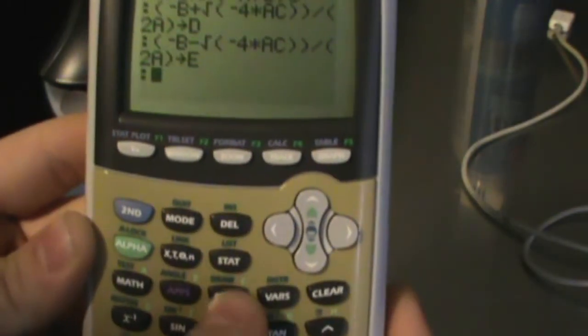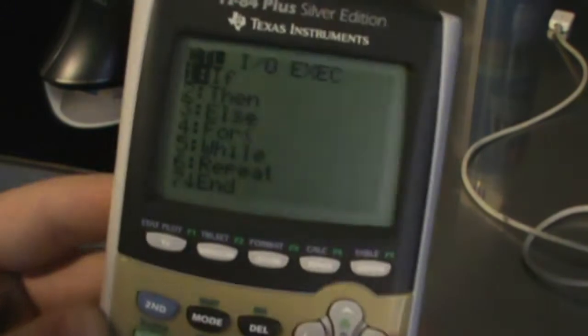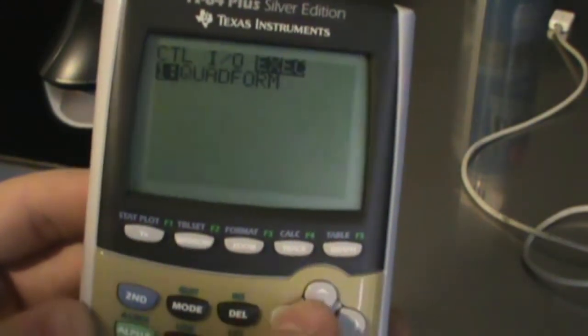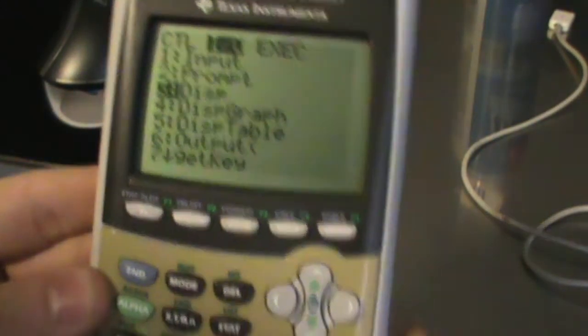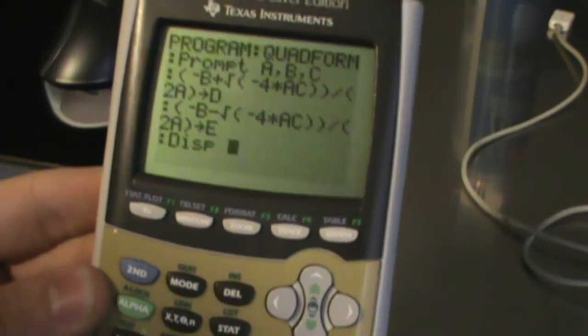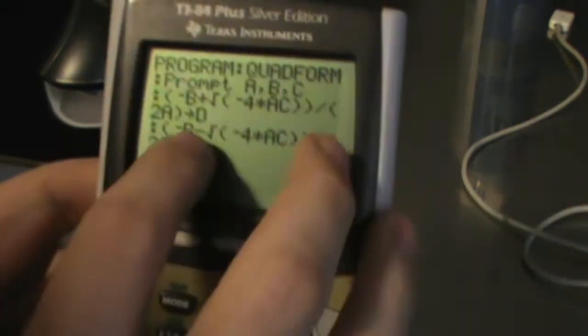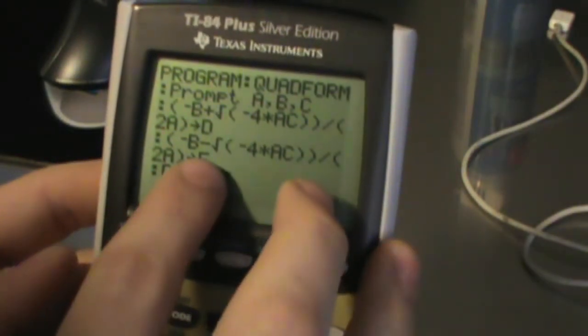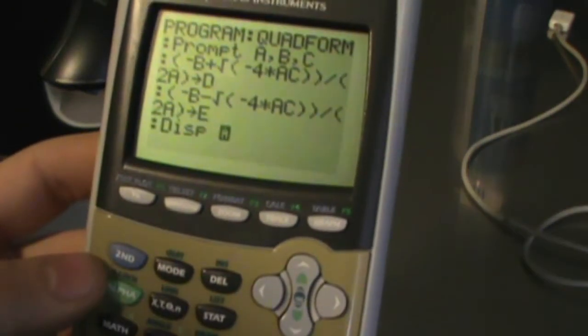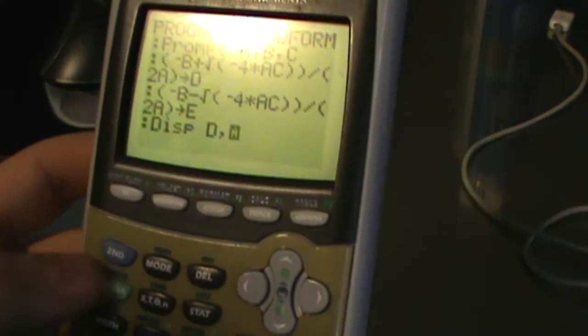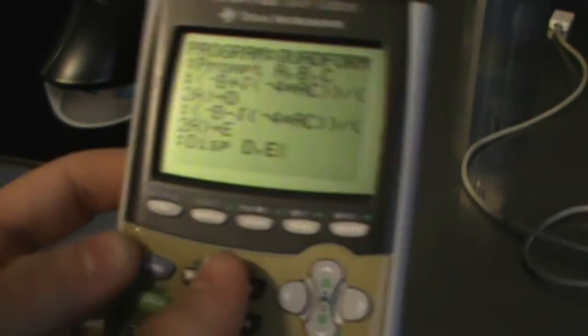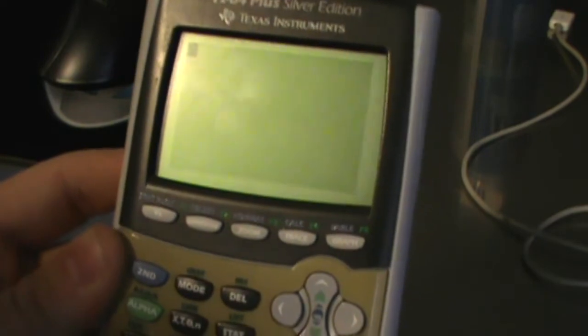Now, next thing we're going to do is hit program. We're going to scroll over to display. We want it to display D and E. So, display D, comma, E. And hit second, quit. And there's your formula.